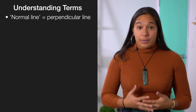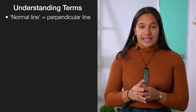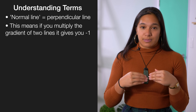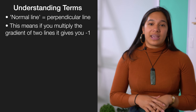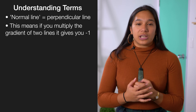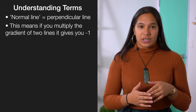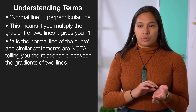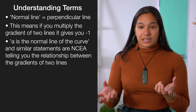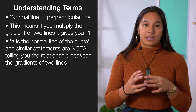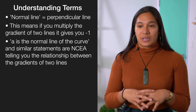An important term to keep yourself familiar with is 'normal line', which is basically just another way of saying perpendicular line. This means that at a point, two gradients multiplied by each other are equal to negative one. In a question it can be worded as 'a normal line to the curve' or 'a and b are perpendicular to each other', and that's just talking about the relationship between the two lines.